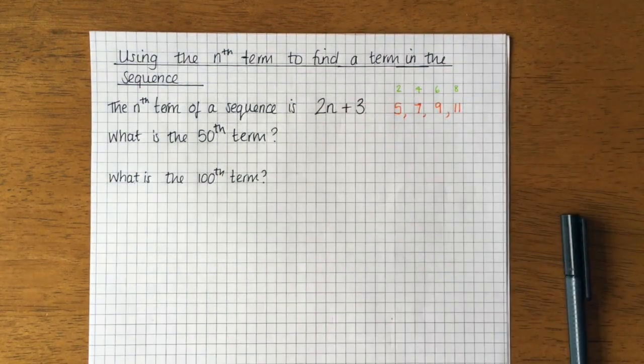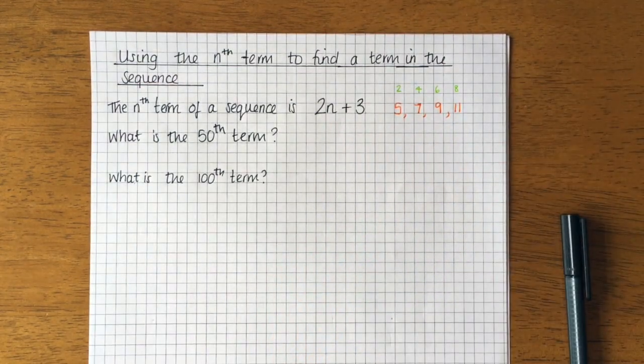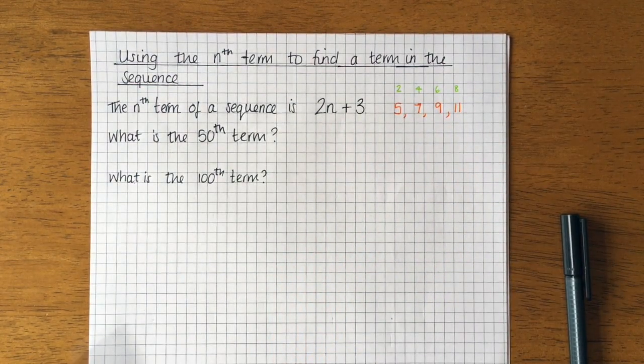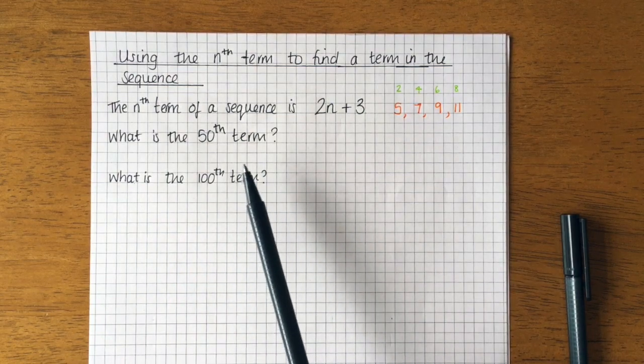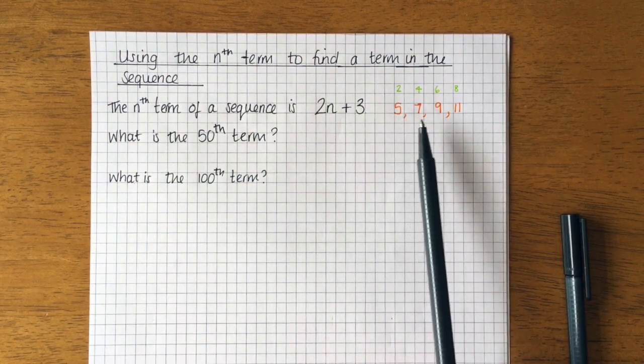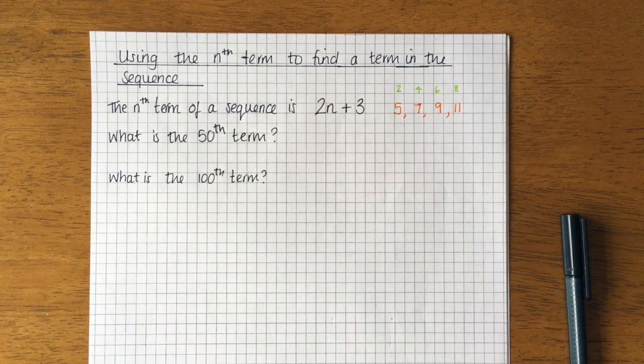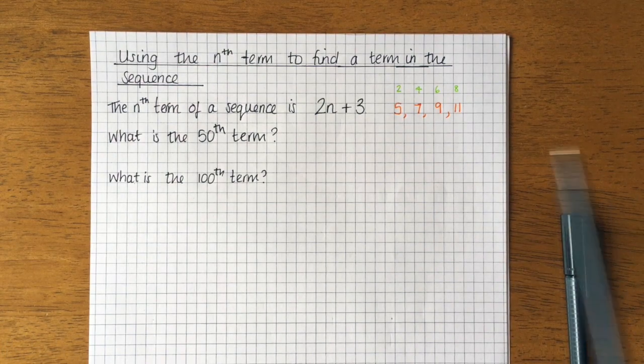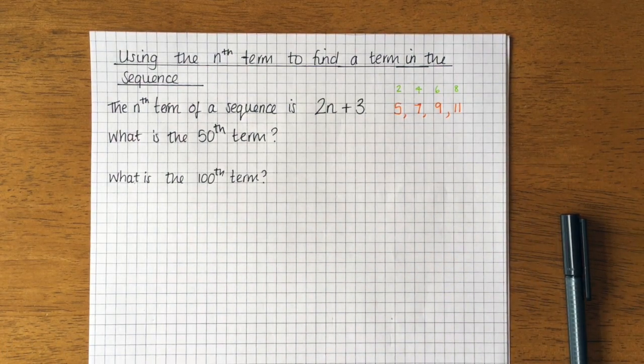So that would be my sequence for this nth term. Now, if I wanted to find the 50th term, of course I could just keep going with this sequence and keep writing it out until I got to the 50th number, and then keep going until I got to the 100th number.